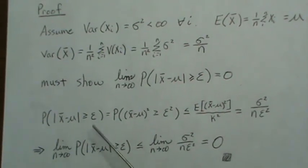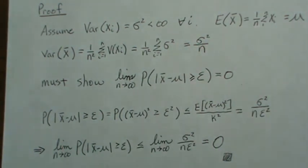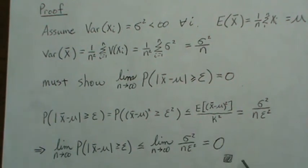And then, if we take the limit of both sides, this side and this side, which is what we do here, this limit goes to zero, which says the probability here goes to zero, and we're finished.